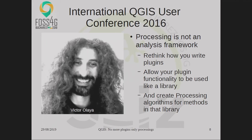The processing capabilities allow you to reuse analysis tools and processes. Victor said that when you build or want to create new plugins, firstly rethink how you write it. Allow plugin functionality to be used as a library, to be reused in other plugins. And if you do that, create processing algorithms so people can reuse the QGIS modeler to reuse your processes.